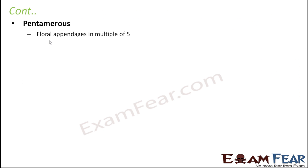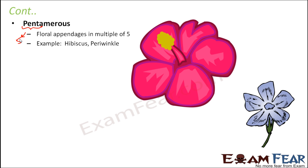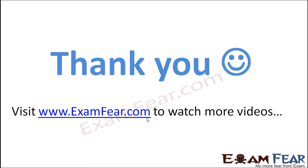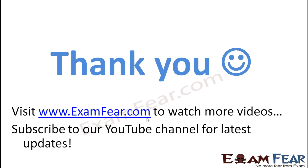Pentamerous flowers have petals in multiples of five — 'penta' means five. Examples include hibiscus and periwinkle, which have five petals or multiples of five such as ten or fifteen. In this way, we can categorize flowers into various types depending on the number of petals they have.